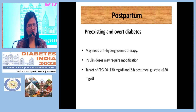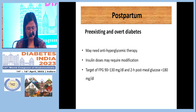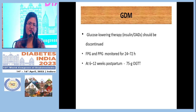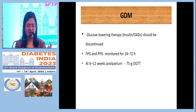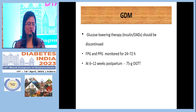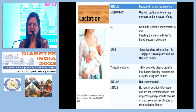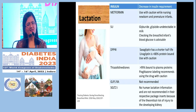In postpartum management, patients with pre-existing or overt diabetes may need continued anti-hyperglycemic therapy with modified insulin doses, using the same cutoffs as in the normal diabetic population. For GDM patients, therapy is usually lowered or stopped. Glucose is monitored for two to three days, and OGTT should be performed at six to twelve weeks postpartum to assess for type 2 diabetes.